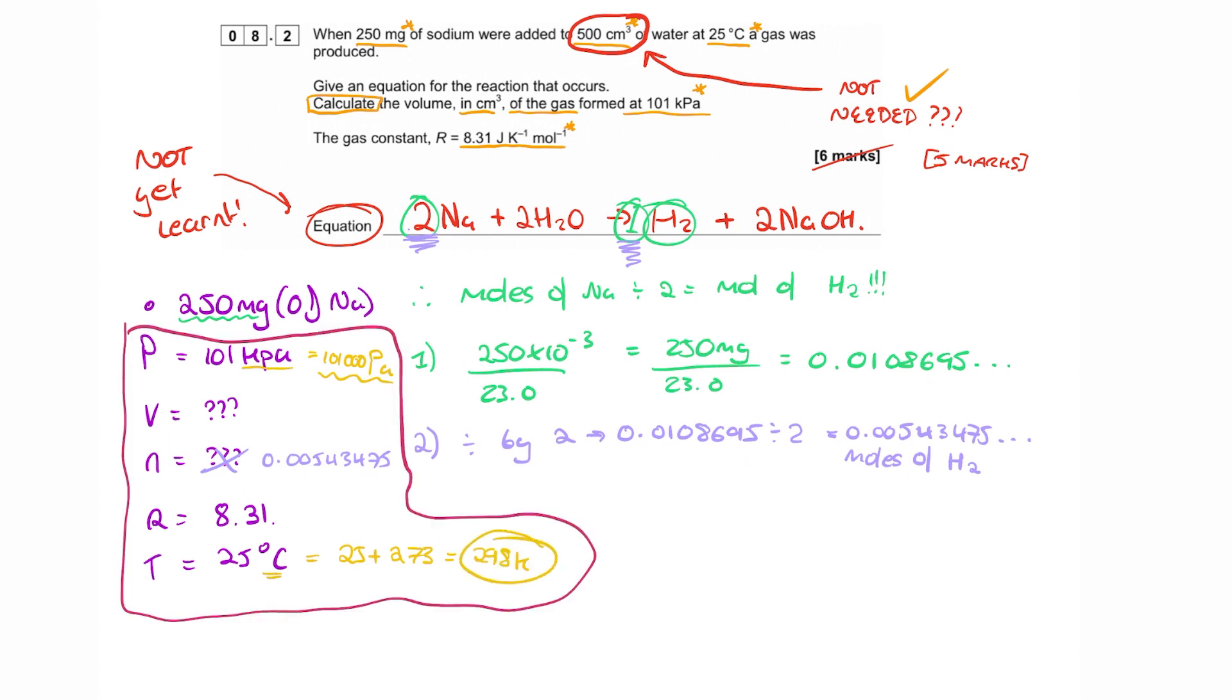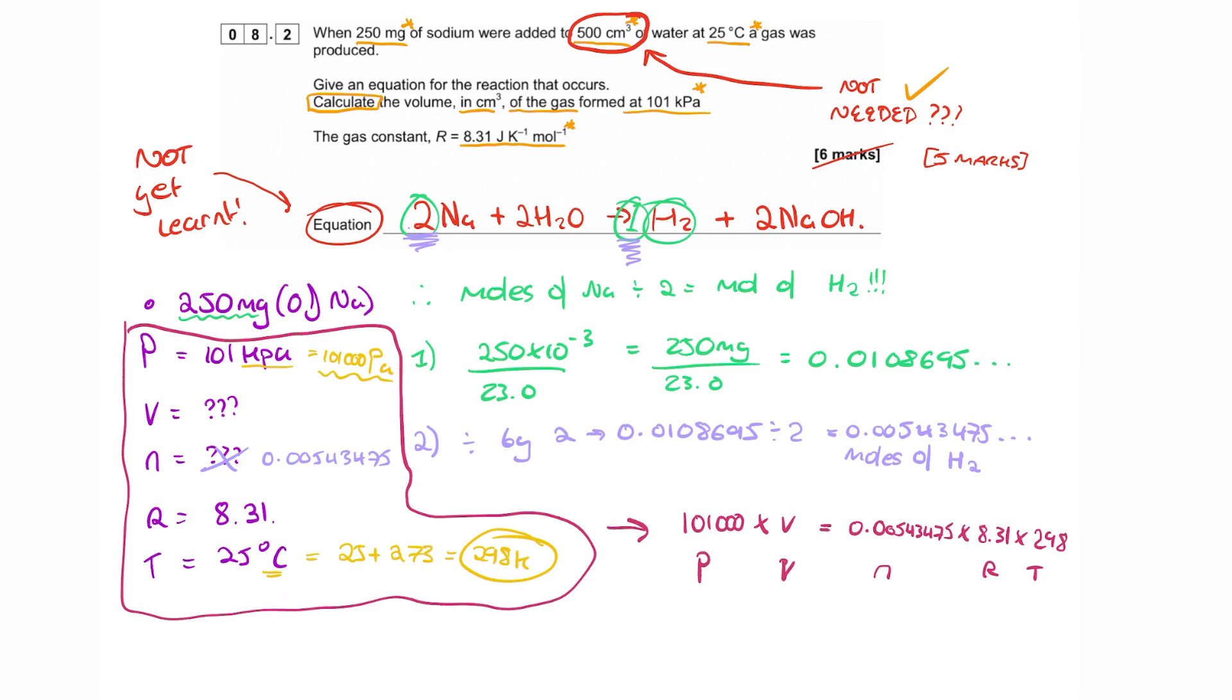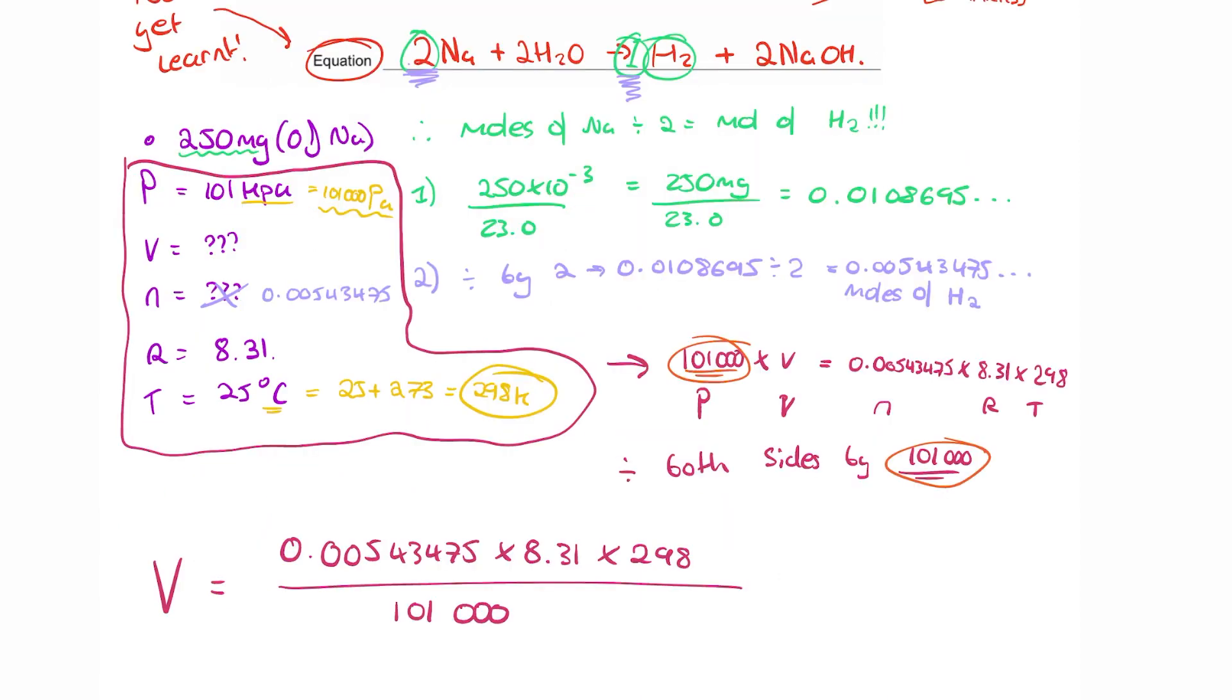Now we can just plug the numbers into the equation. 101,000 times V, which is what we're trying to find, equals NRT. So 0.00543475, that's the moles of hydrogen, multiplied by R, which is 8.31, multiplied by T in Kelvin, which is 298. We're going to rearrange this equation by dividing both sides by 101,000. But at the end of the day, that is just multiplication and division. Put it into your calculator, and we end up with 1.33252 times 10 to the minus 4.